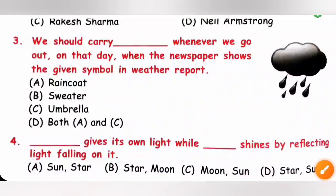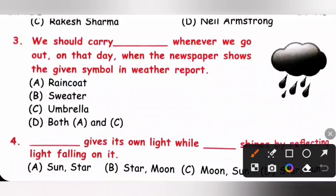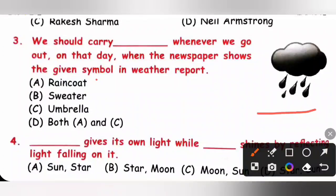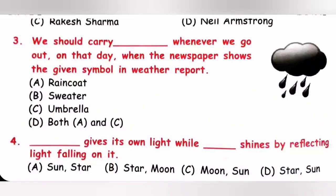Question 3: We should carry what whenever we go out on a day when the newspaper shows a rainy weather symbol? The given symbol represents a rainy day, so we should carry both a raincoat and an umbrella. Option B (sweater) — no; option A (raincoat) and C (umbrella) — yes. So option D, both A and C, is the correct answer.